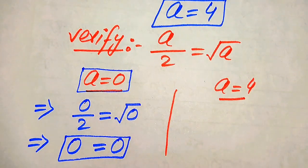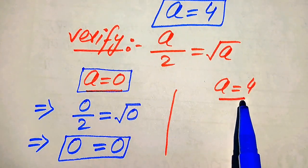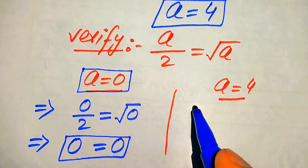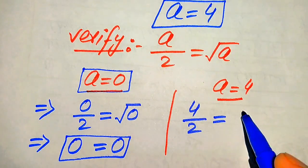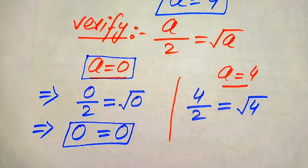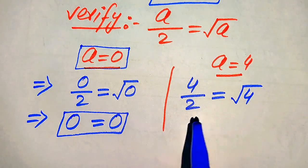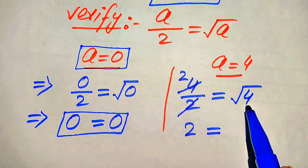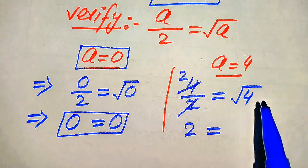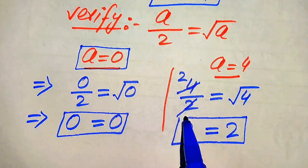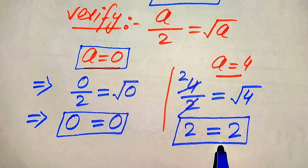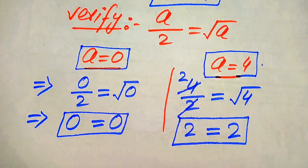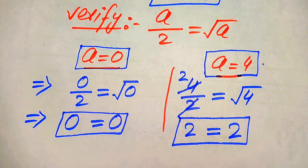Now we check the second value a = 4. Substituting into the equation gives 4/2 = √4. Simplifying: 4/2 = 2 on the left-hand side, and √4 = 2 on the right-hand side. Left-hand side equals right-hand side, confirming that a = 4 also satisfies the given equation. So the final answer from Method 1 is a = 0 and a = 4.